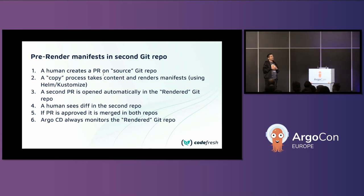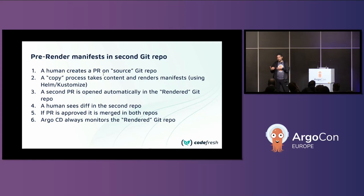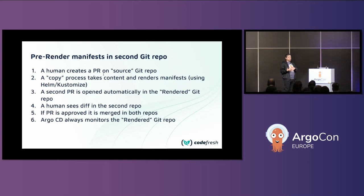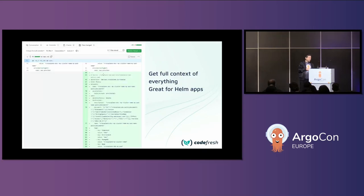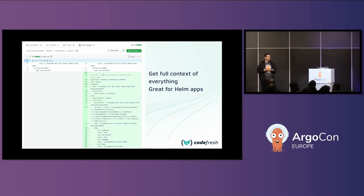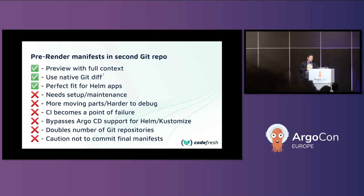Now the diff information exists on the second repo, so you can look at the diff on the final rendered manifest. You might think this copy process is simple to automate with CI, but you also need to account for your workflow. If I open a pull request to the first repo and want to see a diff on the pull request, I also need a pull request on the second repo. You need to automate opening that PR too. When I approve the first PR, I want to automatically approve the second one as well. Things are more complex than they seem, but the end result is great — you see the final manifest and can approve confidently without rendering anything mentally.